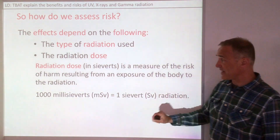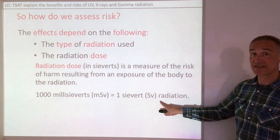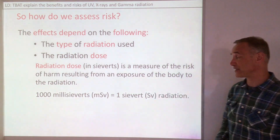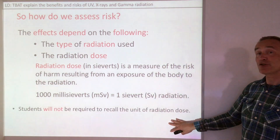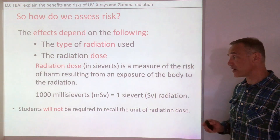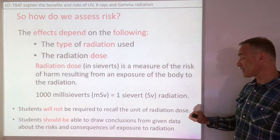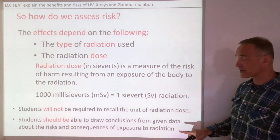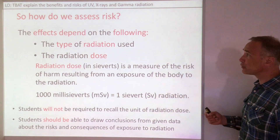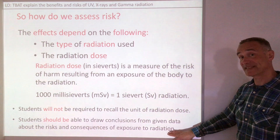Radiation dose is measured in millisieverts, and there are a thousand millisieverts in one sievert — that's a massive dose, which is why we measure it in millisieverts. Students are not required to remember the unit of radiation dose, but you should be able to draw conclusions from given data about the risk and consequences of exposure to radiation. We'll now look at one or two questions to see how this might be tested.